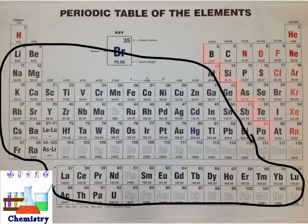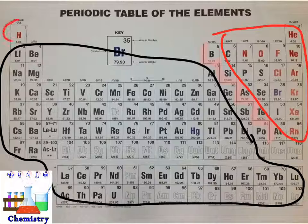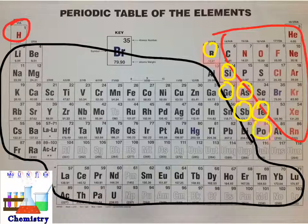The elements found to the right of that stair-step line, including hydrogen as well, are considered non-metallic elements. And all of the elements that are along that stair-step line — boron, silicon, germanium, arsenic, antimony, tellurium, polonium — are considered metalloids. Their properties are sort of in between those of metals and non-metals.